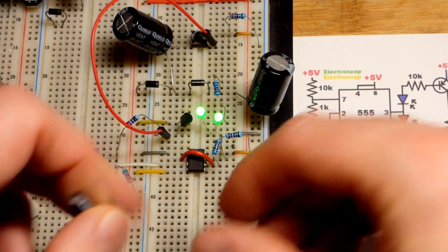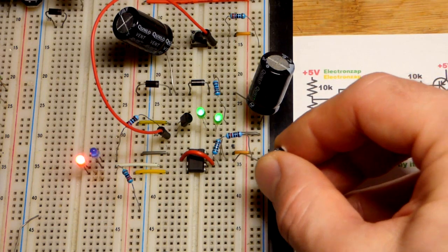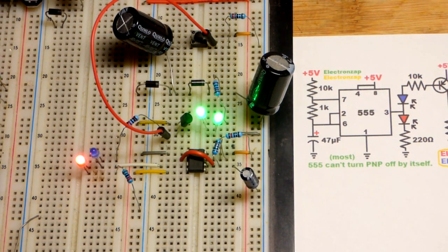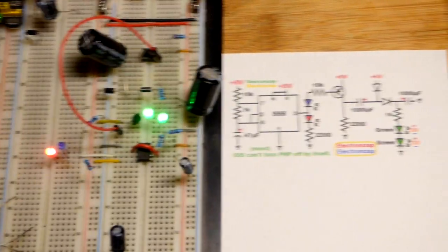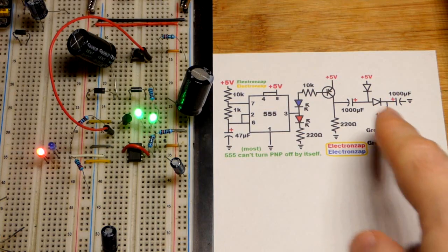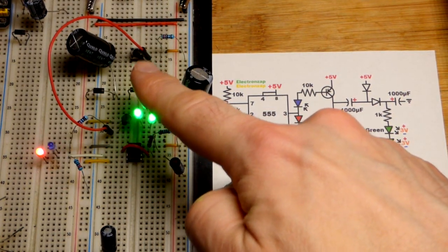So you can still see the pulses even on a camera, in person you can see it a little more. We'll grab a 22 microfarad capacitor so that's probably what I should have used there, that 47 would be okay. And there again we still have some pulses but that's a whole lot better.